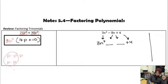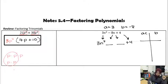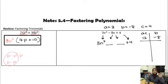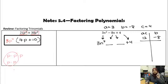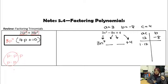I'm going to create a table where I look for two numbers with a product of A times C and a sum of B. My A value is 3, my B value is negative 8, and my C value is 4. So A times C is 12, and B is negative 8. I'm looking for two numbers that multiply to 12 but add to negative 8. You might need to list all the factors — that's okay; it's better to be thorough. So 1 times 12 is 12, but 1 plus 12 is not negative 8.